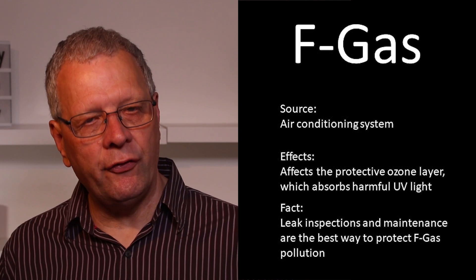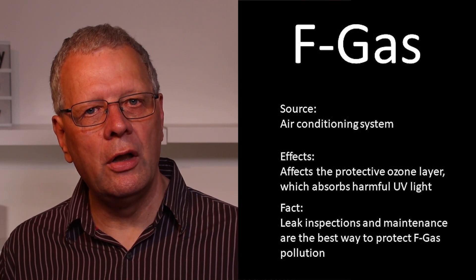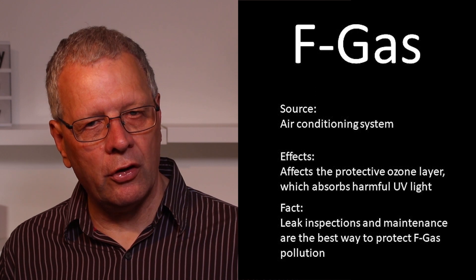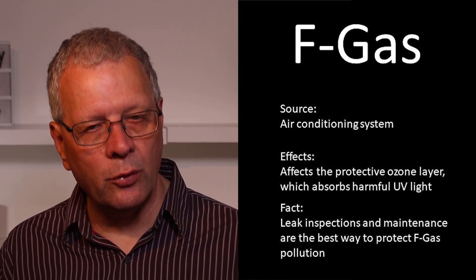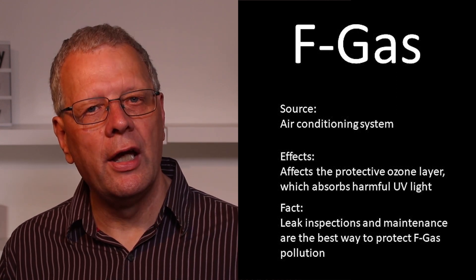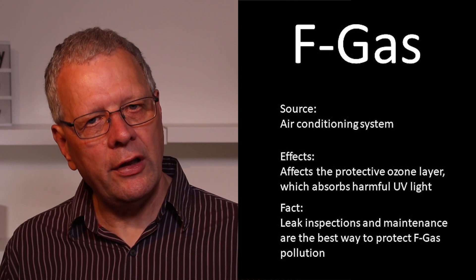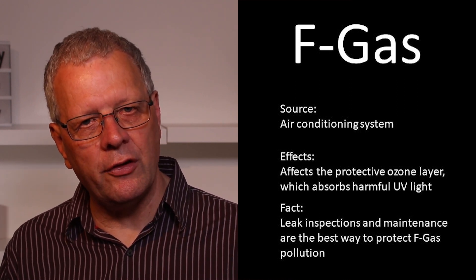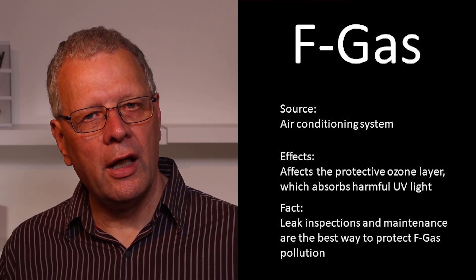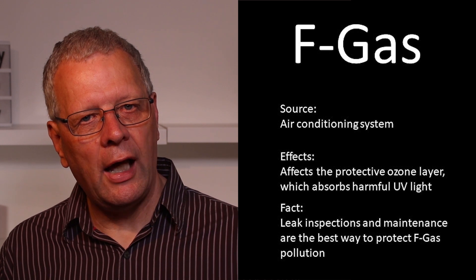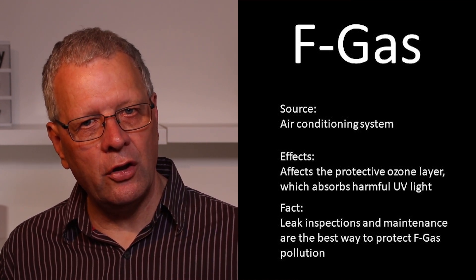Our final air pollutant is something not often discussed when talking about air pollution: the family of gases called F gases. F gases comprise materials such as chlorofluorocarbons and hydrofluorocarbons — the materials used to create the cooling effect in air conditioning units in homes and offices, or used as propellants in various industrial processes. Once these gases escape into the atmosphere, they can dramatically affect our protective ozone layer, which prevents harmful ultraviolet light from having such a dramatic effect on human and animal life.